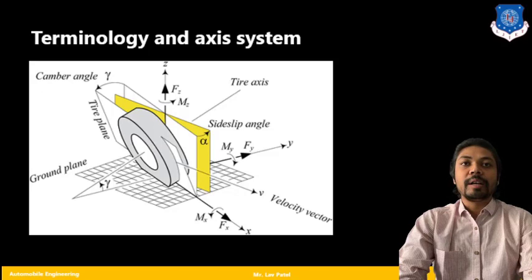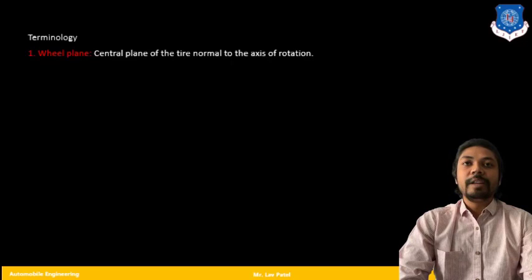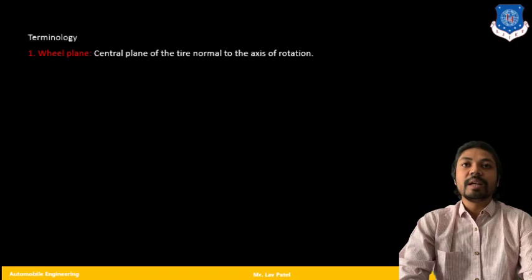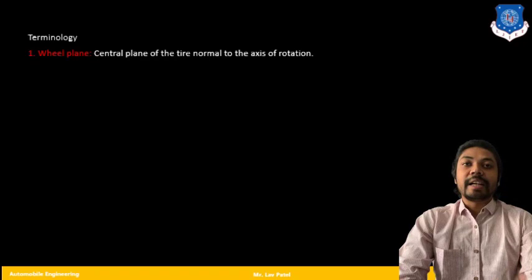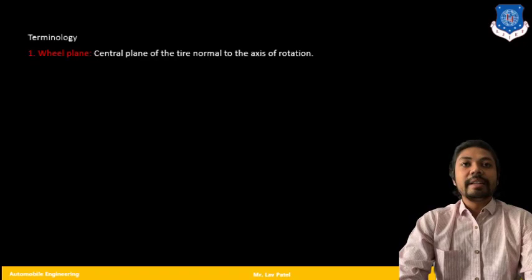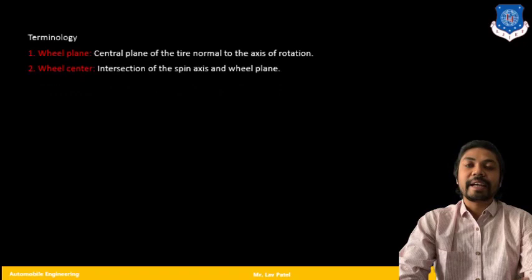Let us begin with the first, that is wheel plane. The wheel plane is the central plane of the tire, normal to the axis of rotation. In the previous picture you have seen that a center plane is there and also the axis of rotation is there, that is normal to the axis of rotation, that we can call wheel plane. Second is wheel center. That is the intersection of the spin axis and wheel plane. That is my wheel center.